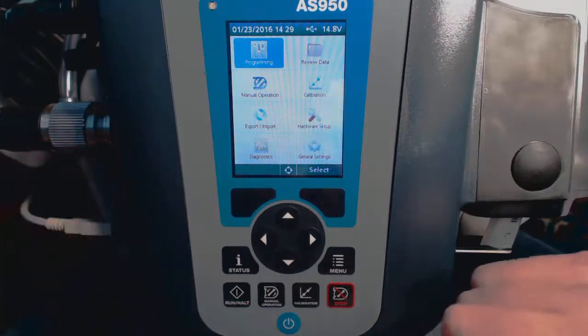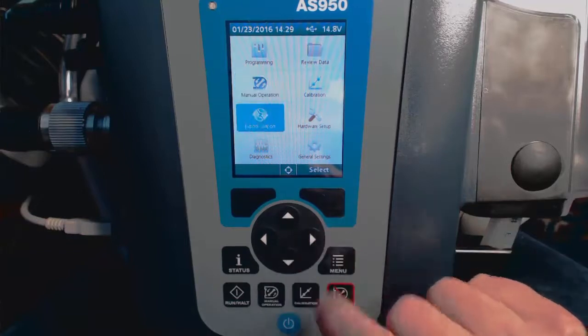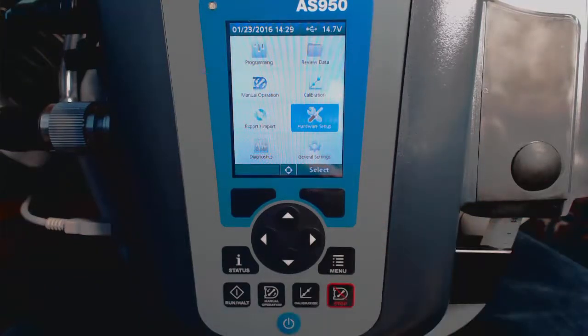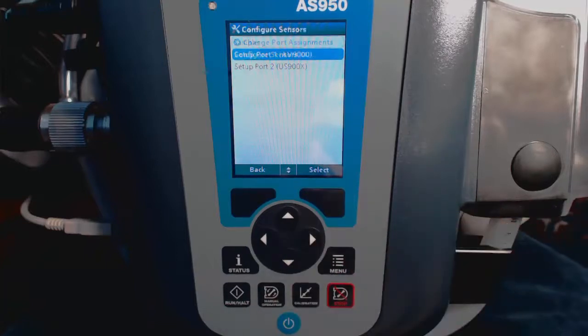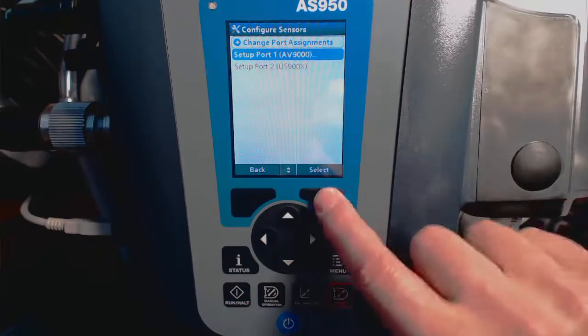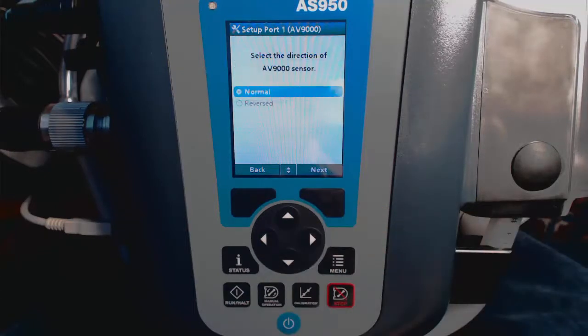The next step is to go into Hardware Setup and configure our sensor to calculate flow and calibrate the sensor. We go to Hardware Setup, Configure Sensors, and select the AV9000. I recommend using the Setup Wizard to calibrate and set up the sensor, so we're going to select Setup Wizard and now walk through the process.